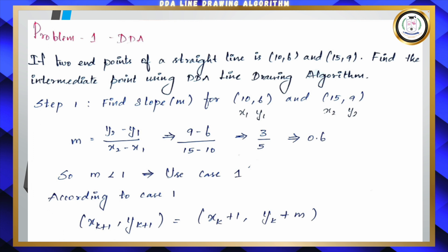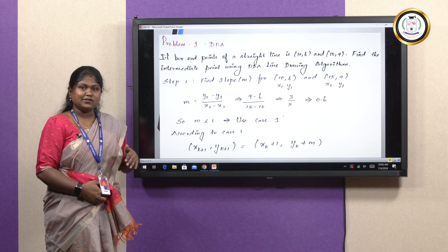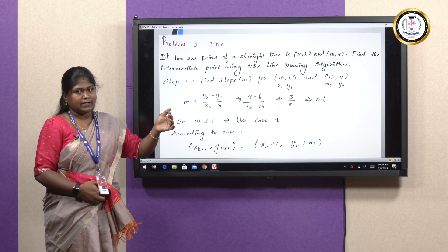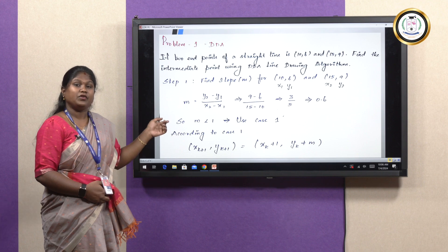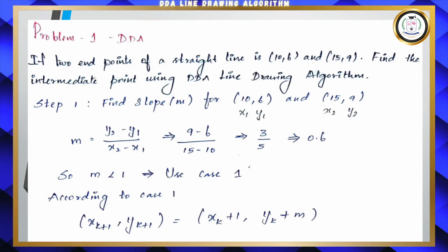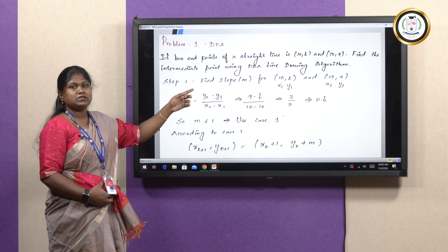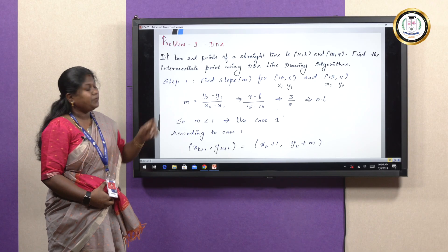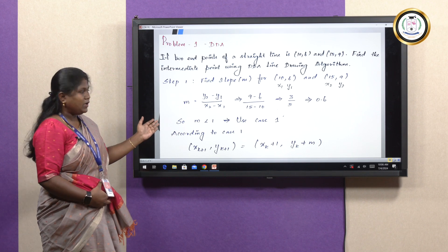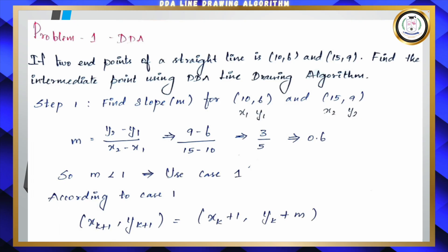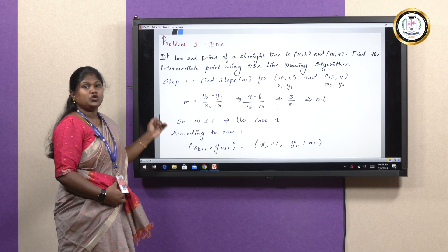In this problem, we are provided with two endpoints: (10, 6) and (15, 9). Our intention is to find the intermediate points so that we can plot the line. DDA line drawing algorithm will help us find them. As per DDA, the first step is to find the slope: M = (Y2 − Y1) / (X2 − X1). Taking (10, 6) as X1, Y1 and (15, 9) as X2, Y2, we get M = 0.6, which is less than 1. So we opt for Case 1.